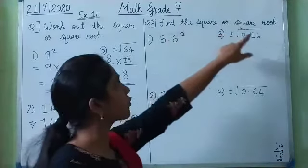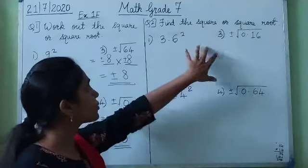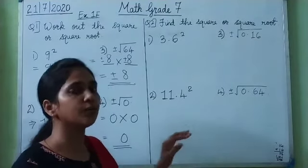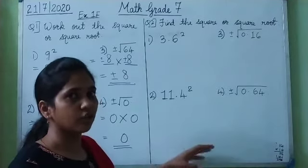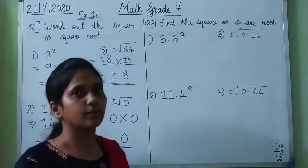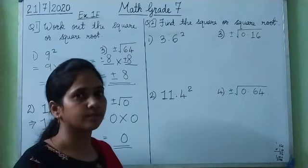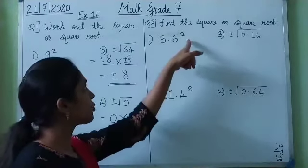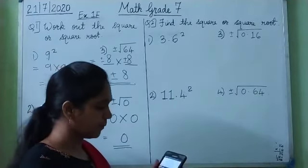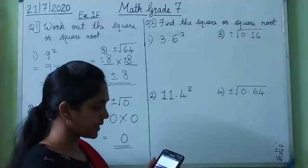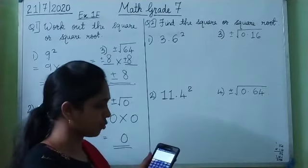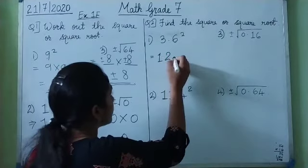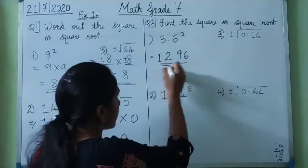The second question is to find the square or square root using a calculator — you can use a calculator for these sums, or you can solve by hand. The first question is to find the square of 3.6. By calculator, I type 3.6 and press the x-squared button. This gives me the answer: 12.96. So the square of 3.6 is 12.96.